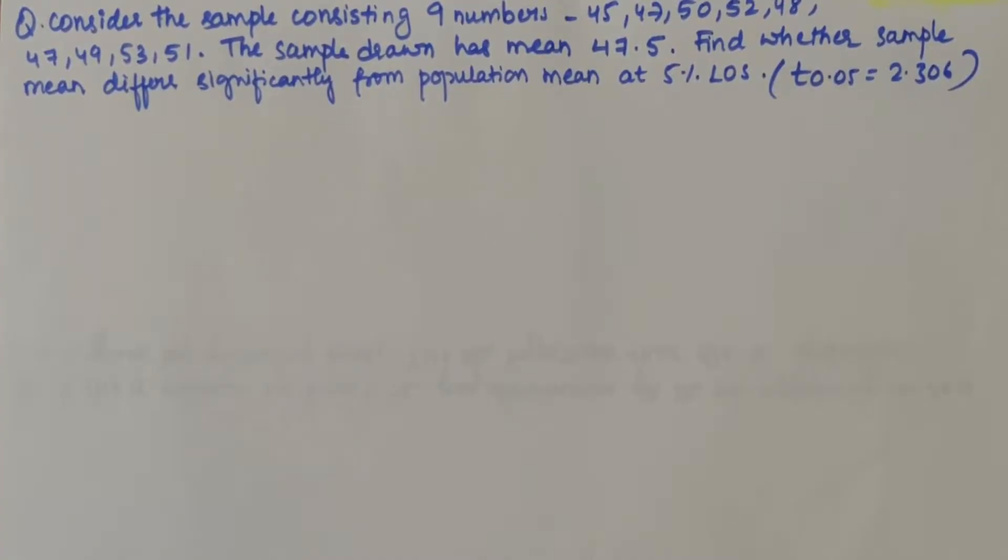The problem statement says that a sample consisting of 9 numbers was taken and the sample mean has a value of 47.5. We have to find whether the sample mean differs significantly from the population mean at 5 percent level of significance. The t of 0.05 is given as equal to 2.306.